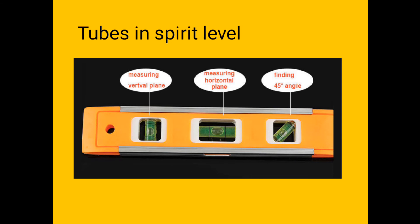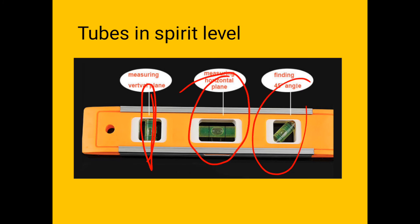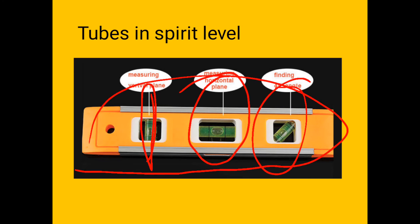There are three tubes in the spirit level. The first tube is for identifying a vertical plane or vertical surface. The second tube is for identifying a horizontal surface. The third one is for identifying an inclined surface at a 45-degree angle. You can see here Spirit Level 1, 2, and 3.